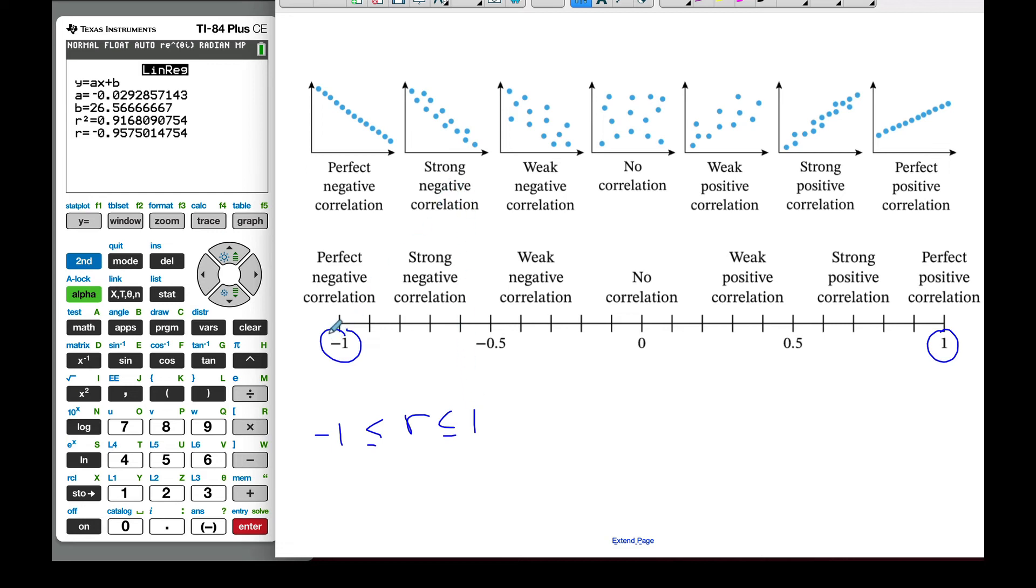And then all values in between, it goes from strong negative correlation, which is pretty tightly linear, to weak, to no, to weak positive, to a strong positive, to a perfect positive. And so those are our values.